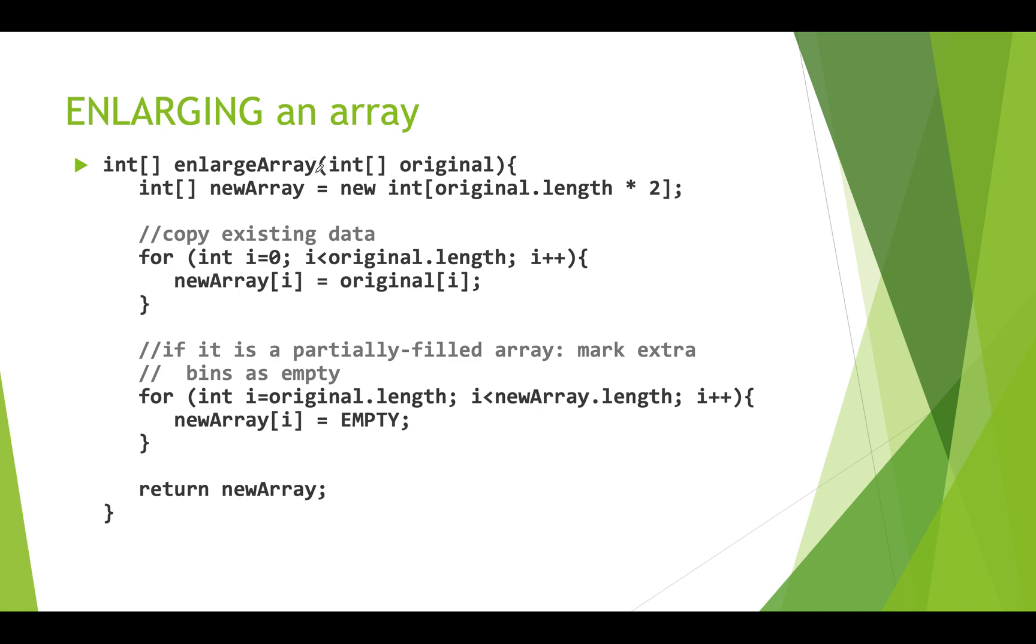So let's look at what this looks like. Here's the code. So we have enlargeArray. We pass in our original array. And then inside this function, we create a new array. It's also an int. And the size of our new array is the original length times two. So this is where we're creating an array that's double the size. Then we go through and we copy the existing data. So we go from zero up to original length, and we copy from the data from the slots in original into the slot in newArray. And then if it's a partially filled array, we have to mark those extra bins as empty. So from i equals the original length up to the new array length, which is sort of that second half of this new double size array, we're going to set those slots to empty. And then we simply return newArray. And so you're going to call this and set it to the array pointer that you already have. And you'll suddenly have a new double sized array.